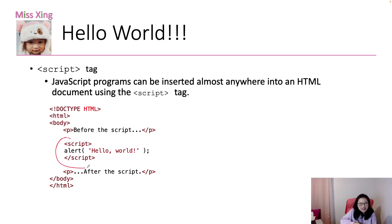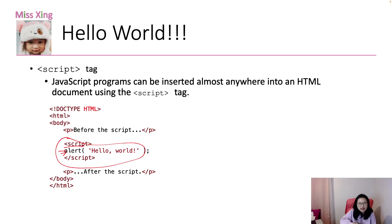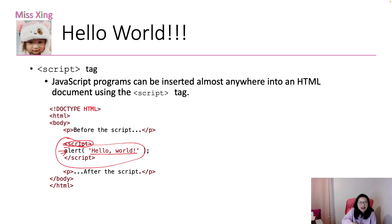Here in the script we have some JavaScript code — this alert. Alert is a function, a method, and when we run this HTML inside the browser you will see Hello World pop out. The script tag can be put in the body or in the head — normally those are the two places.